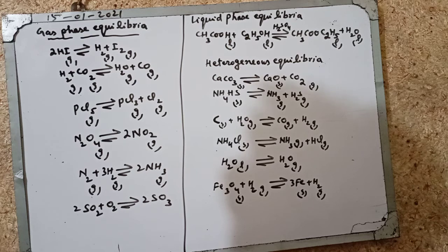When iron oxide Fe3O4 is treated with H2O it gives Fe and H2O.